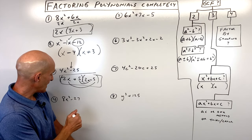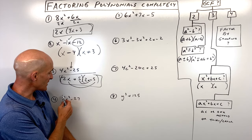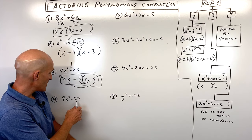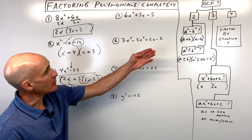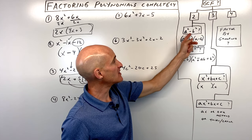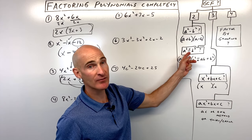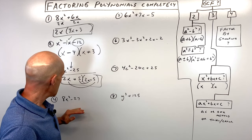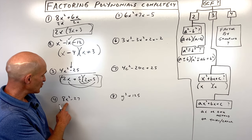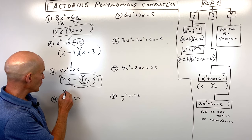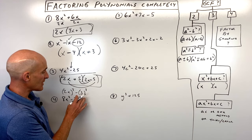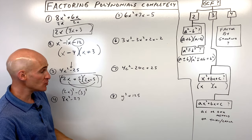Number four, we've got 8x cubed minus 27. First step: is there a greatest common factor? It doesn't look like there is. How many terms are there — two, three, or four? There are two terms. We want to decide if it's a difference of two squares or a sum or difference of two cubes. This is going to be a difference of two cubes, because 8x cubed is really 2x times 2x times 2x, and 27 is really 3 times 3 times 3.